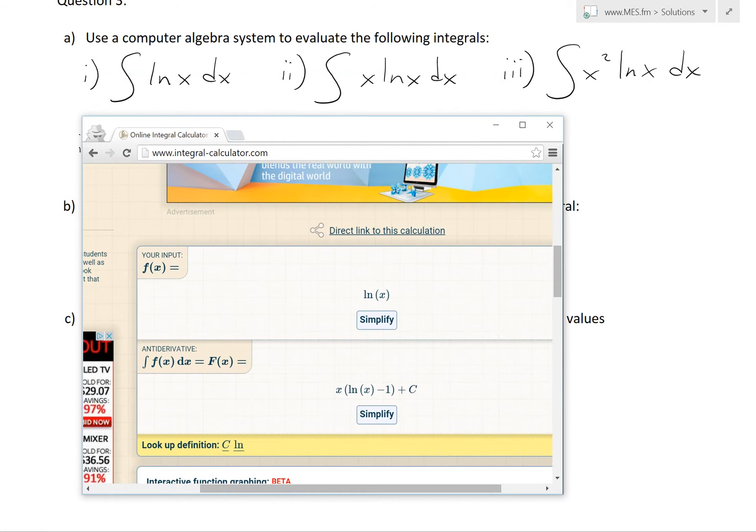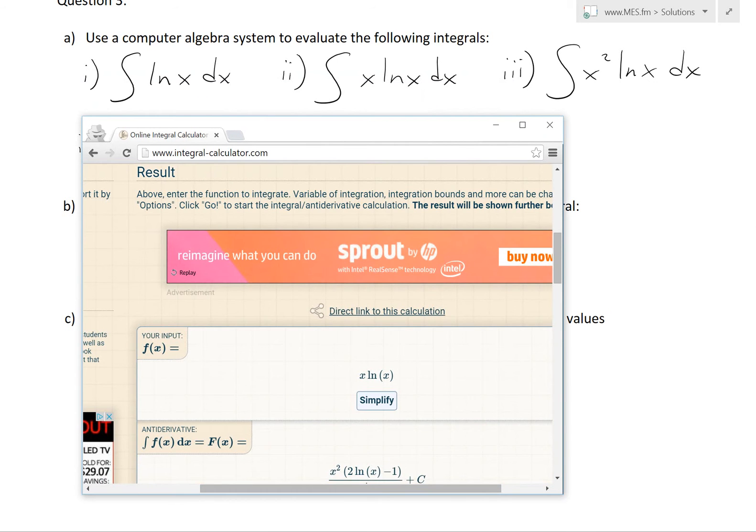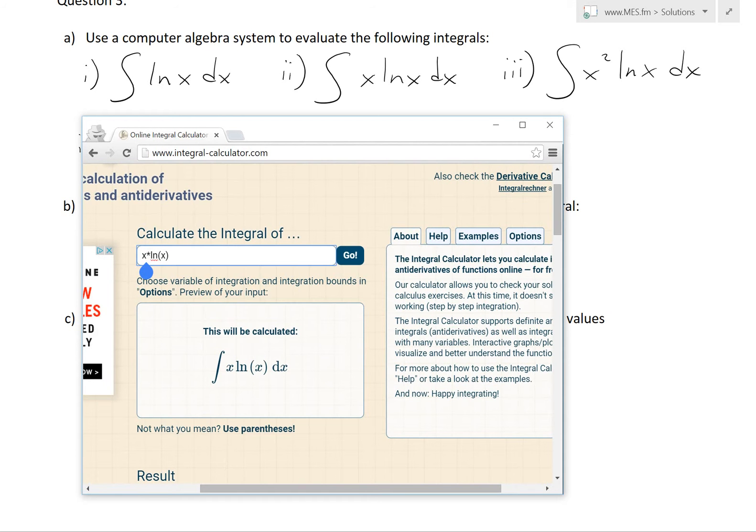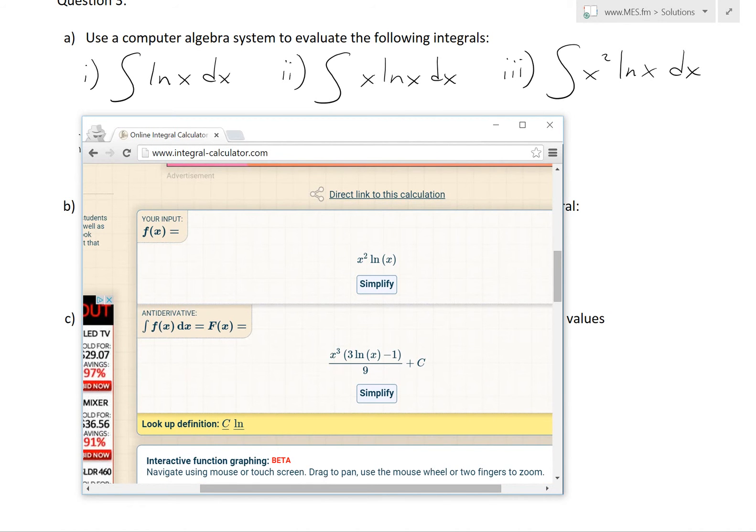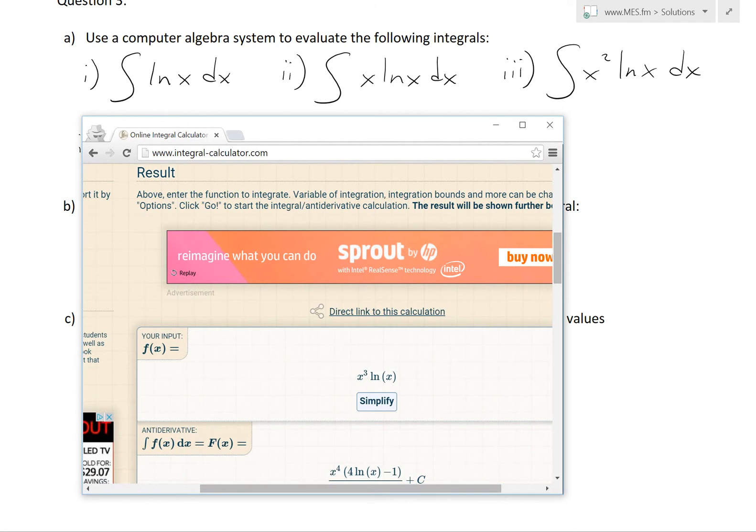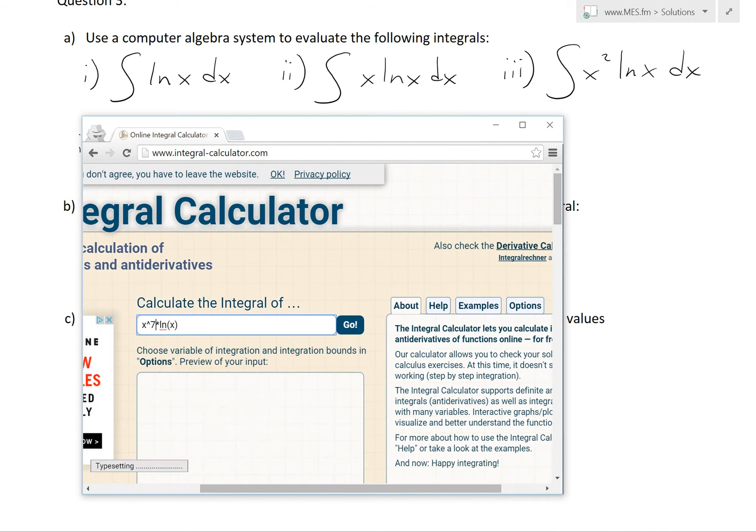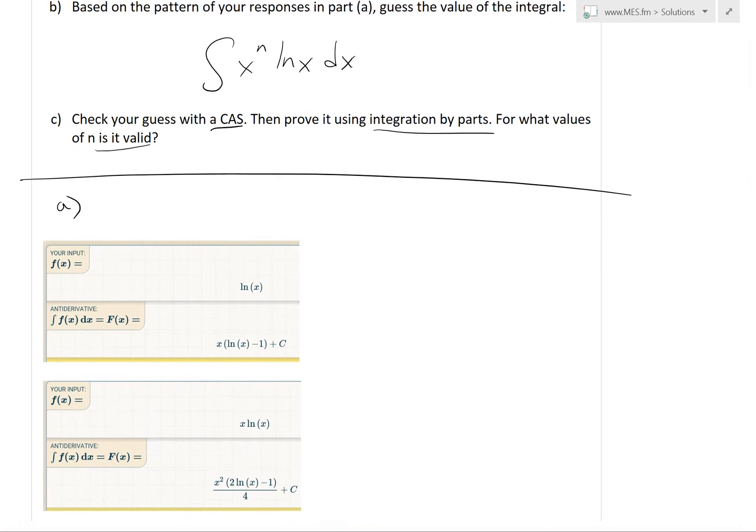Okay, so this one is x times ln x minus 1 plus C. And we'll add these all into my notes soon. So now let's put an x in front, x times ln x. We get x squared, 2 ln x minus 1 divided by 4. And then x power of 2. x cubed 3, then ln x minus 1 divided by 9.